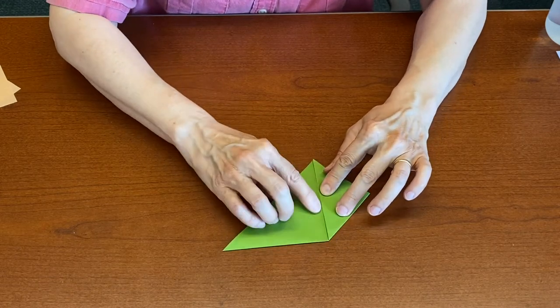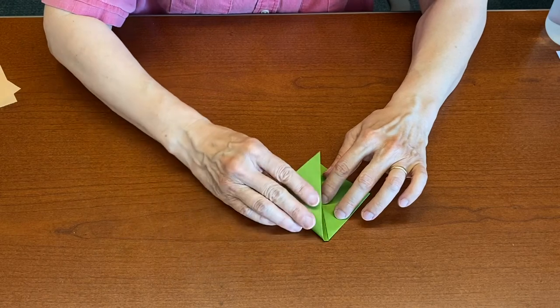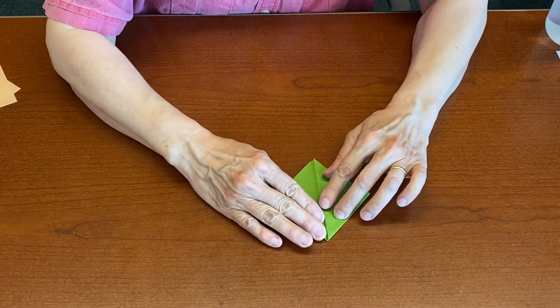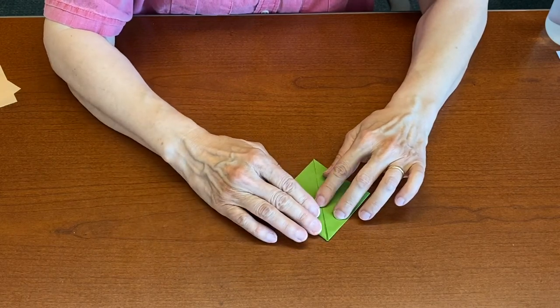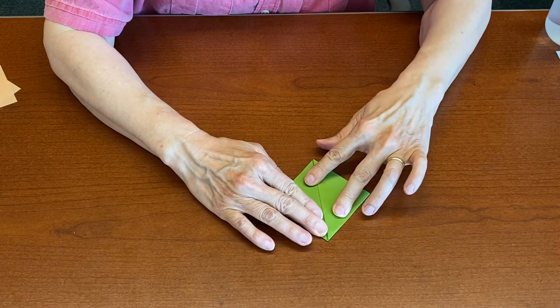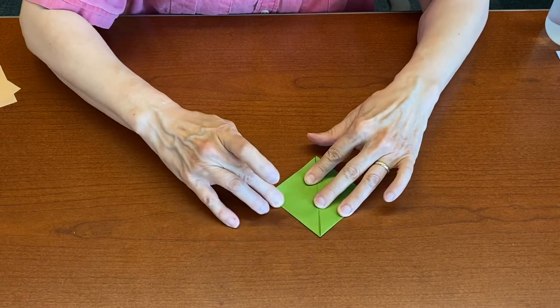This edge is going to come to the center. As usual, just a hair's width of wiggle room there. Do it on both sides. These edges don't have to actually touch but they should be quite close.